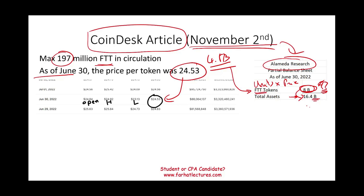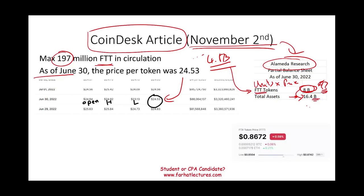Even if you priced the tokens at $28, you would still only arrive at roughly $5 billion. The number had to be far, far higher than the market could support. At the time of this recording, FTT is trading at 86 cents. Take 197 million tokens multiplied by 86 cents — that is the actual value of FTT today, which shows how completely the token collapsed.